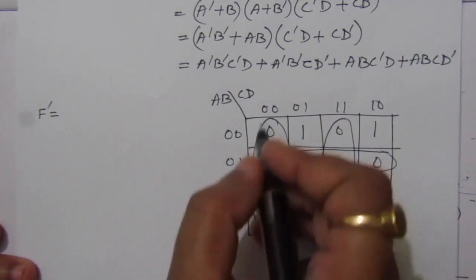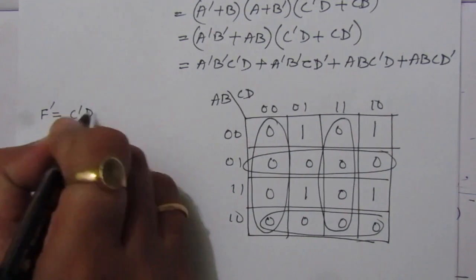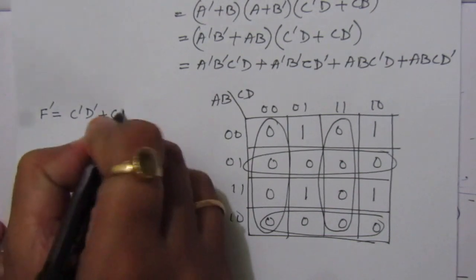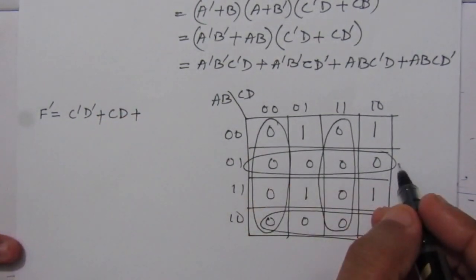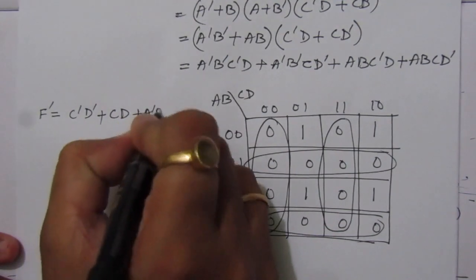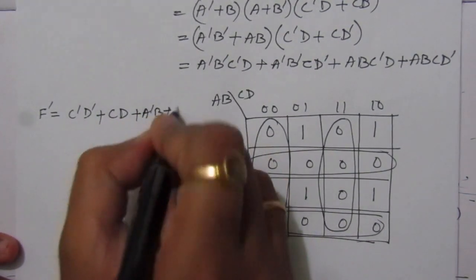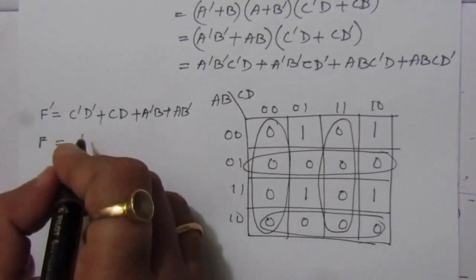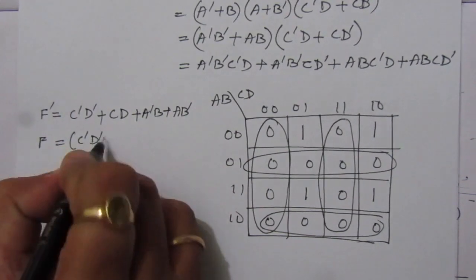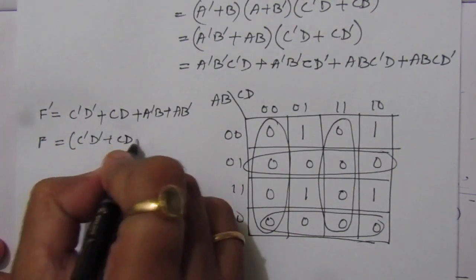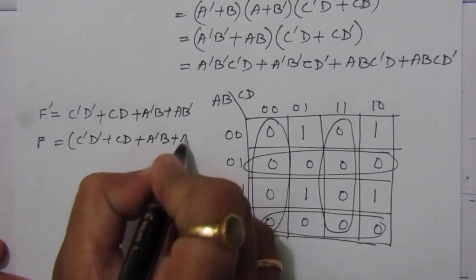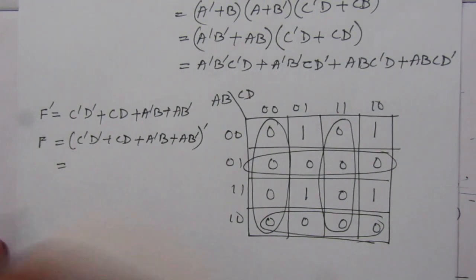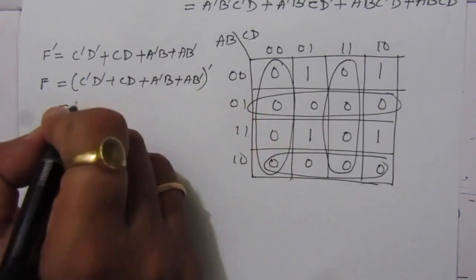Grouping the zeros, from one group we get C̄·D̄, from another column group we get C·D, from one row group we get Ā·B, and from another row group we get A·B̄. So F' = C̄·D̄ + C·D + Ā·B + A·B̄. To get F, we complement this entire expression.